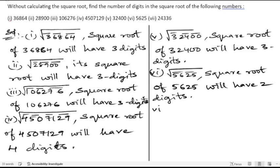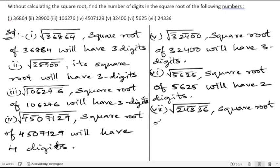The last problem is the square root of 24336. We put the bars, and the square root of 24336 will have three digits.